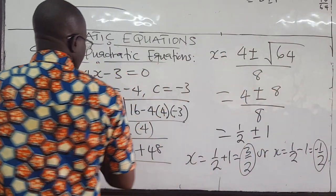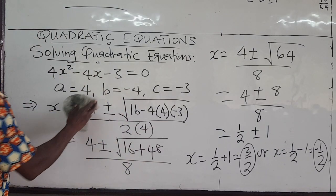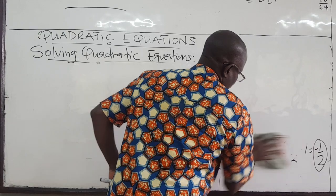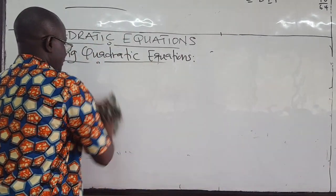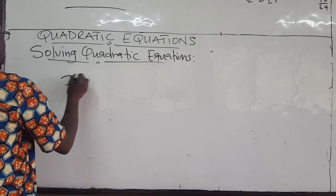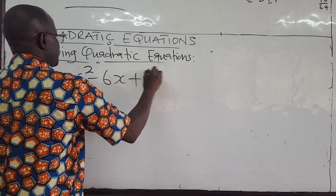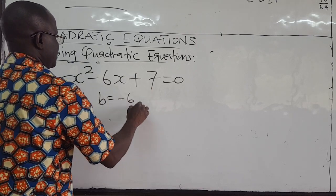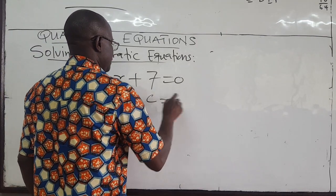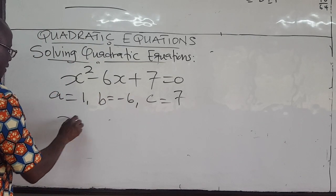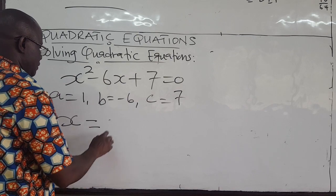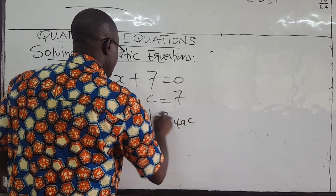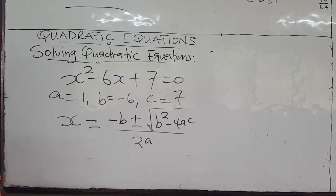If the equation is not factorizable, you can still use this formula to find the roots of the equation. For example, take x² minus 6x + 7 = 0. Here, a = 1, b = negative 6, c = 7. Our formula for the solution is negative b plus or minus the square root of b² minus 4ac, all over 2a.